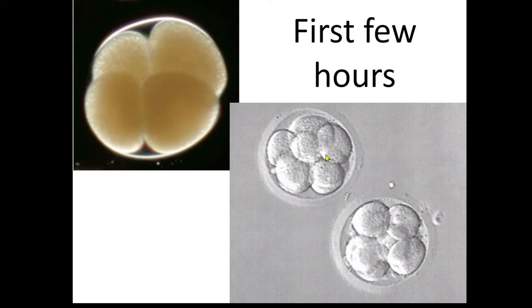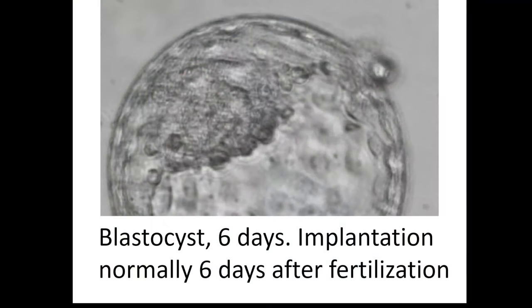We can see the four-cell stage and what looks like an eight, twelve, or sixteen cell stage. Fertilization typically occurs high in the uterine tube — what we used to call the fallopian tubes — and then the cilia, hair-like structures protruding from the wall, waft it down towards the body of the uterus. When it gets there, it implants into the inner lining, the endometrium, typically about six days after ovulation. This stage is called a blastocyst.